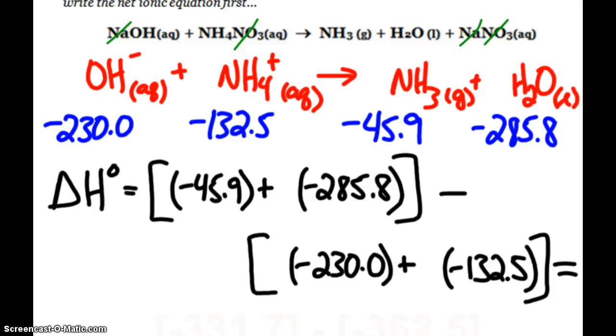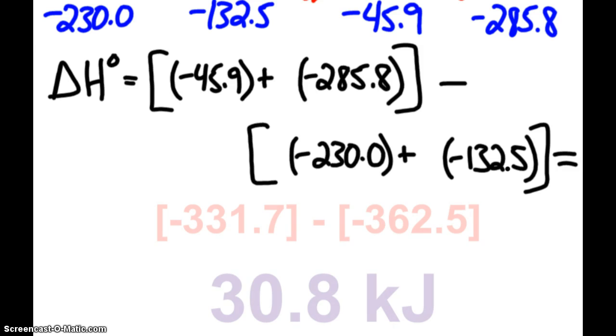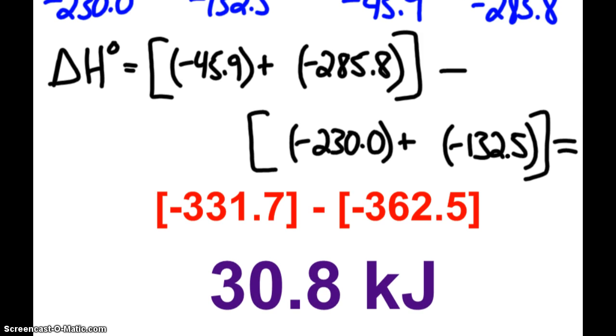Using those delta H of formations, we'll get the same answer. Sum of my products minus the sum of my reactants. And yes, indeed, again, I would get 30.8 kilojoules.